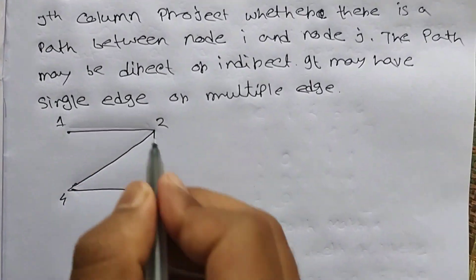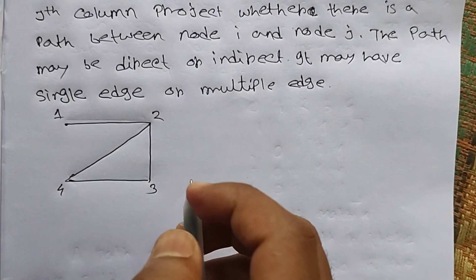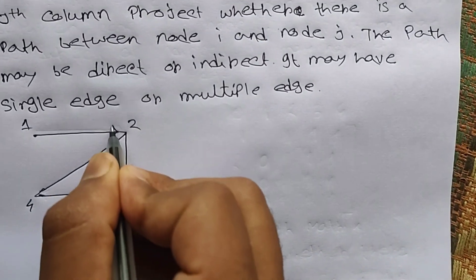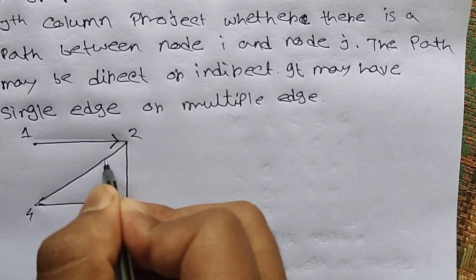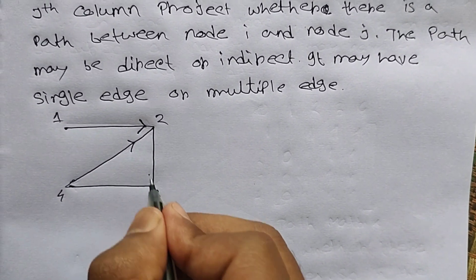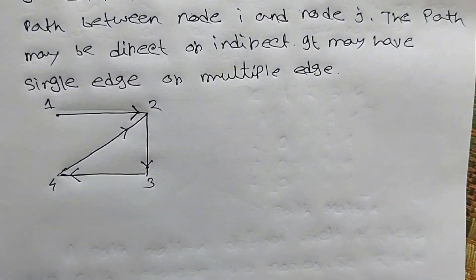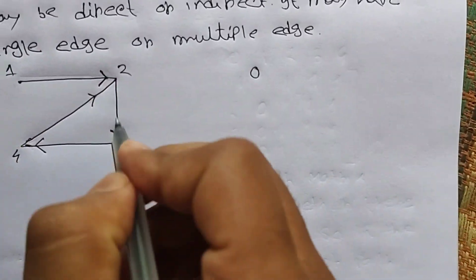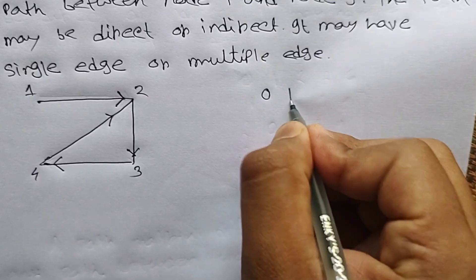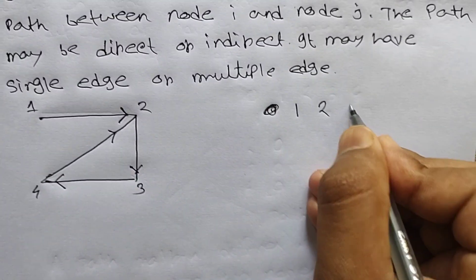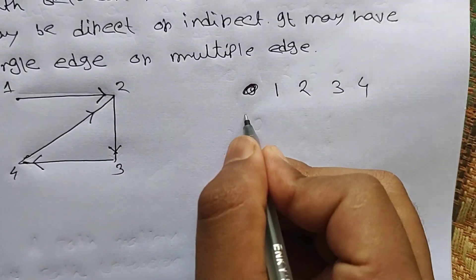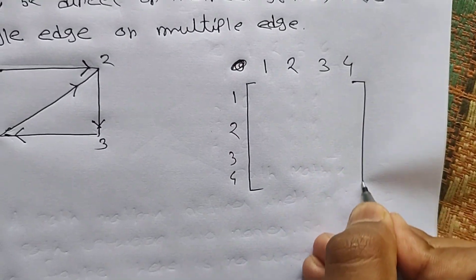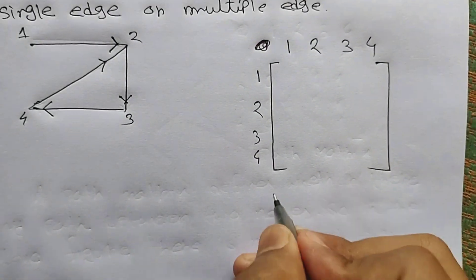Let's take one graph. This is an undirected graph with nodes 1, 2, 3, and 4. To build the path matrix, we need to direct the graph. So the directions are: 1 to 2, 2 to 4, 2 to 3, and 3 to 4. Since there are 4 nodes, we will have a 4x4 matrix.